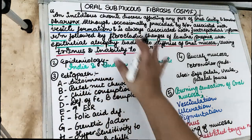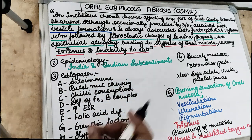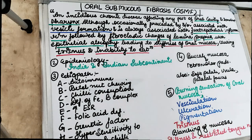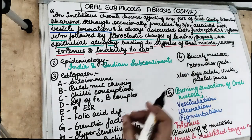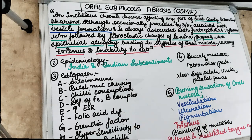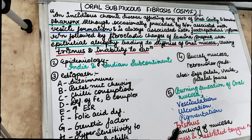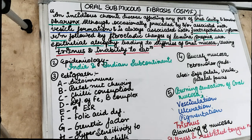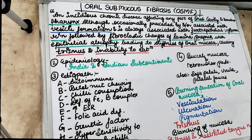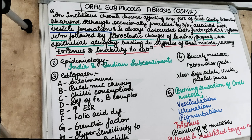Everything is there in the definition itself. This is an insidious chronic disease affecting any part of the oral cavity and sometimes the pharynx, although occasionally preceded by and/or associated with vesicle formation, and is always associated with a juxtaepithelial inflammatory reaction followed by fibroelastic changes of the lamina propria, with epithelial atrophy leading to stiffness of the oral mucosa and causing trismus and inability to eat.